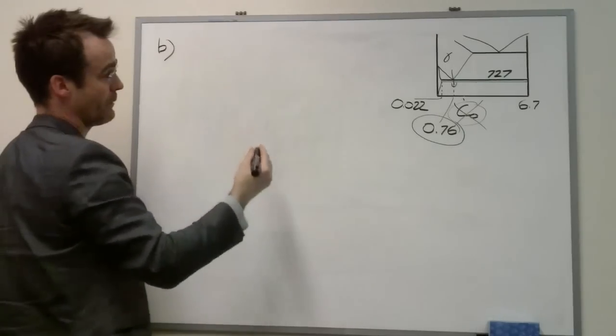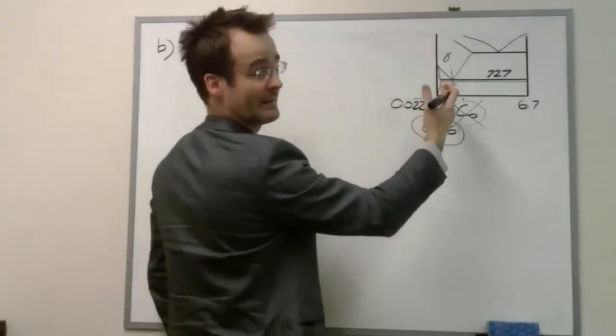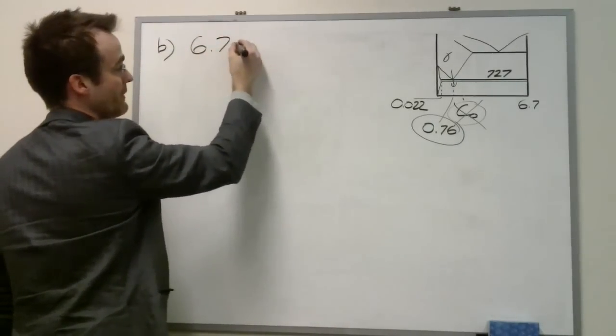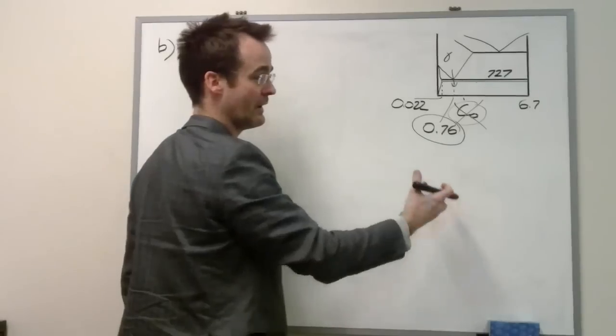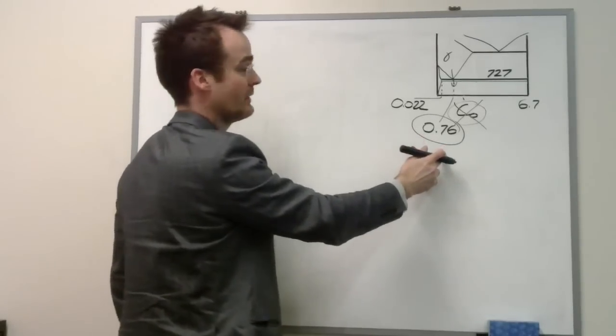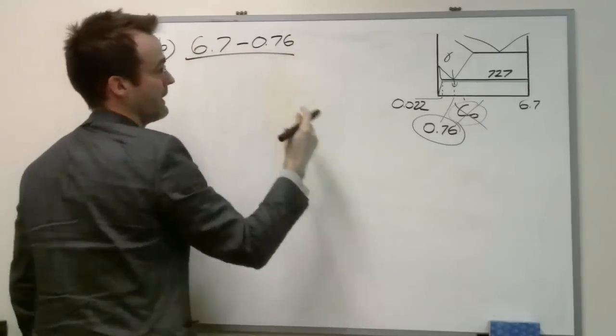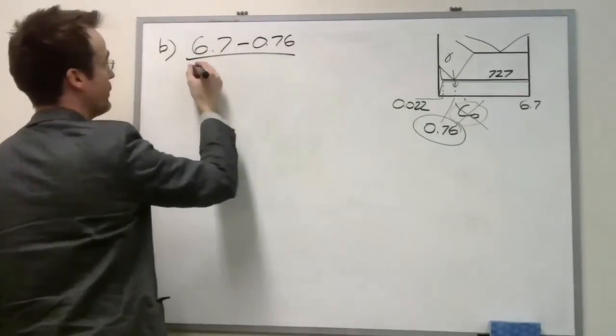So we want to know how much is ferrite. Again, we're going to take the opposite side. We're going to take 6.7 minus the overall composition. The overall composition of perlite is just the eutectoid composition, 0.76, divided by the entire tie line, 6.7 minus 0.022.